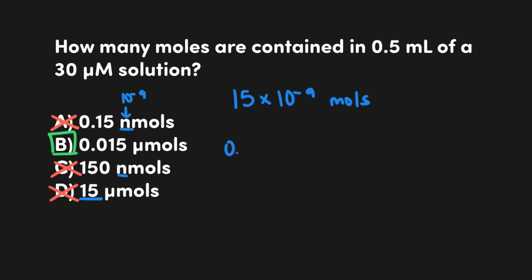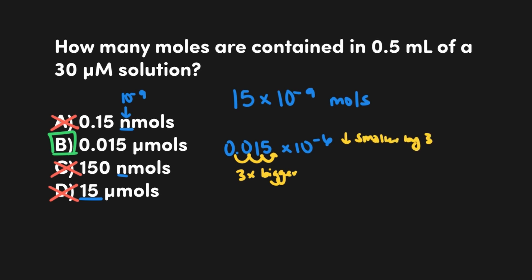To be doubly assured, we can convert answer choice B into scientific notation. We take 0.015 micromoles and convert to 0.015 times 10 to the negative 6 moles. We then move the decimal three places to the right to get 15, and since we've made the number bigger, the exponent compensates by getting smaller by three — becoming 10 to the negative 9. So this equals 15 times 10 to the negative 9, which matches our calculated answer. Once you get the hang of these conversions, you can usually eliminate answer choices simply by sight.